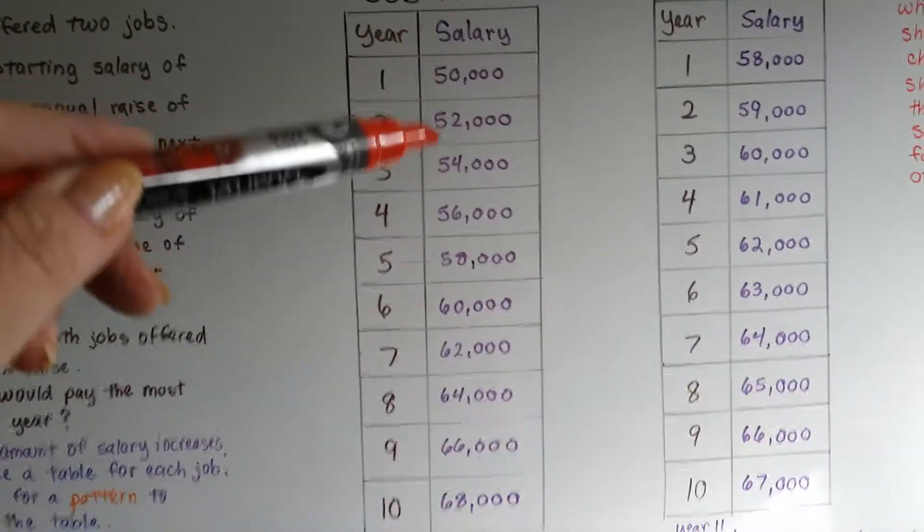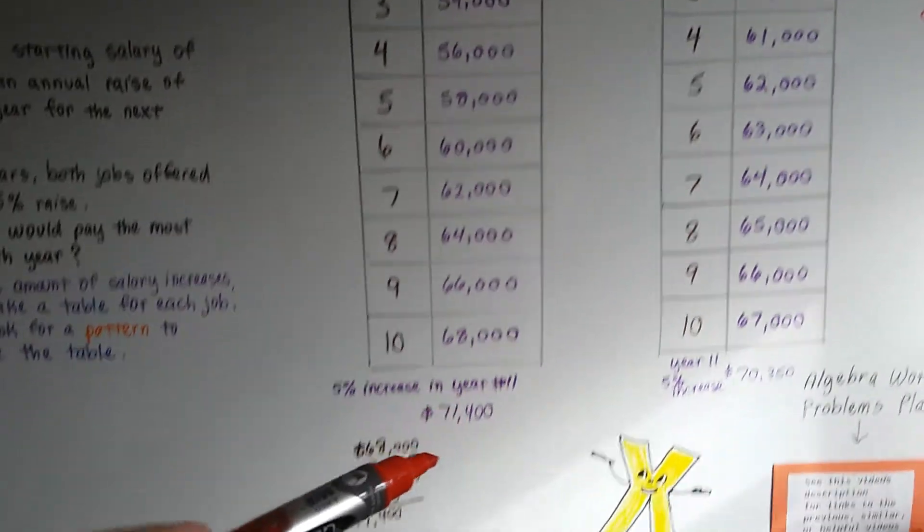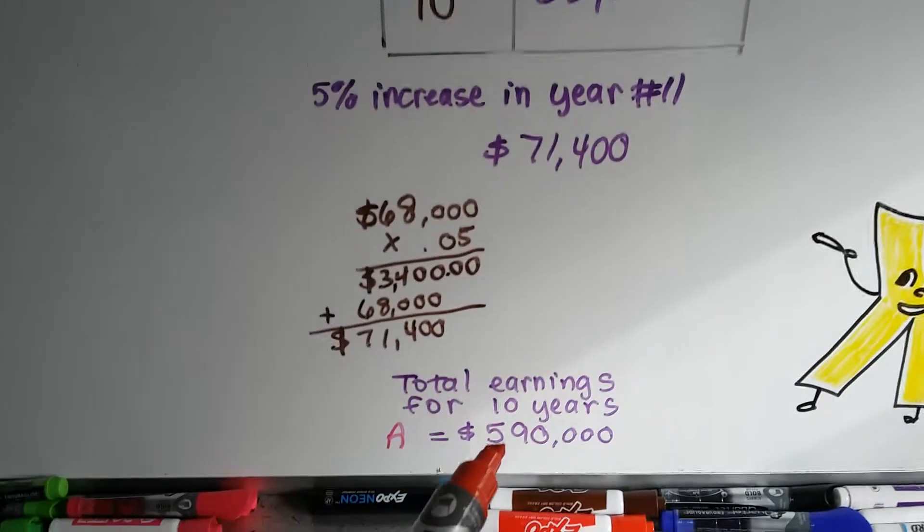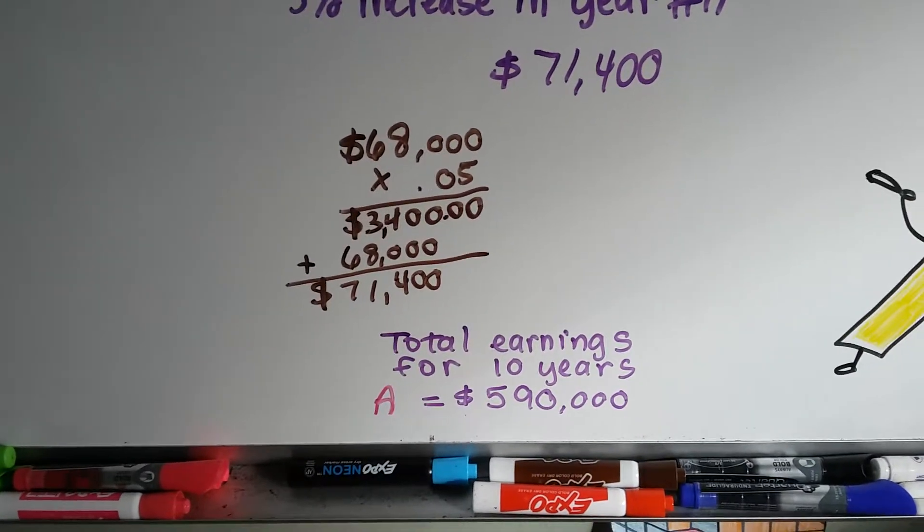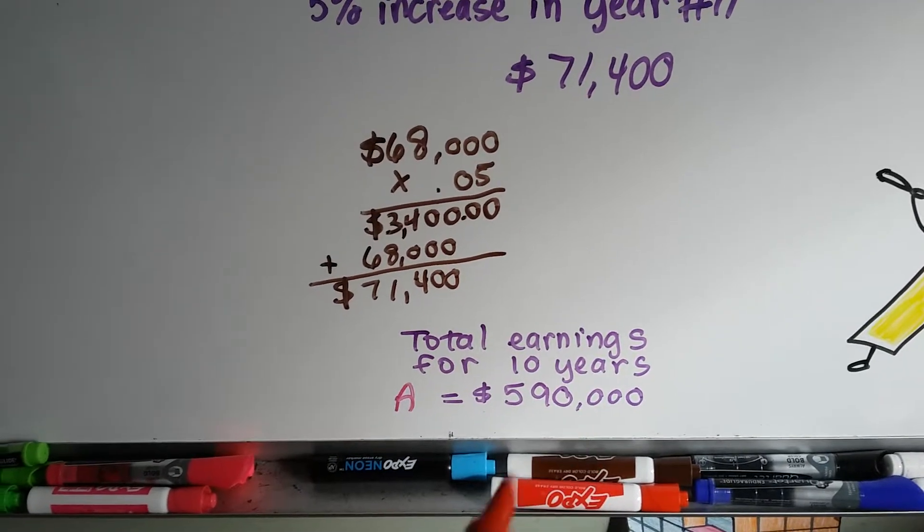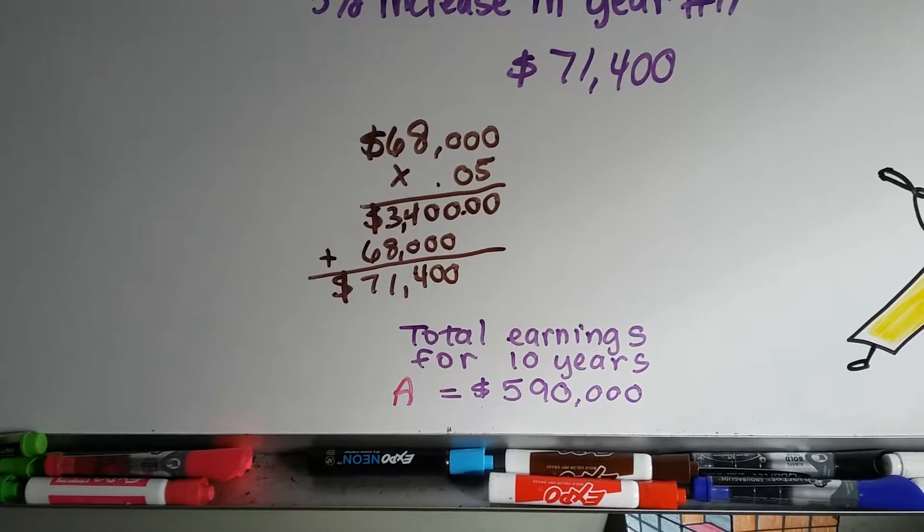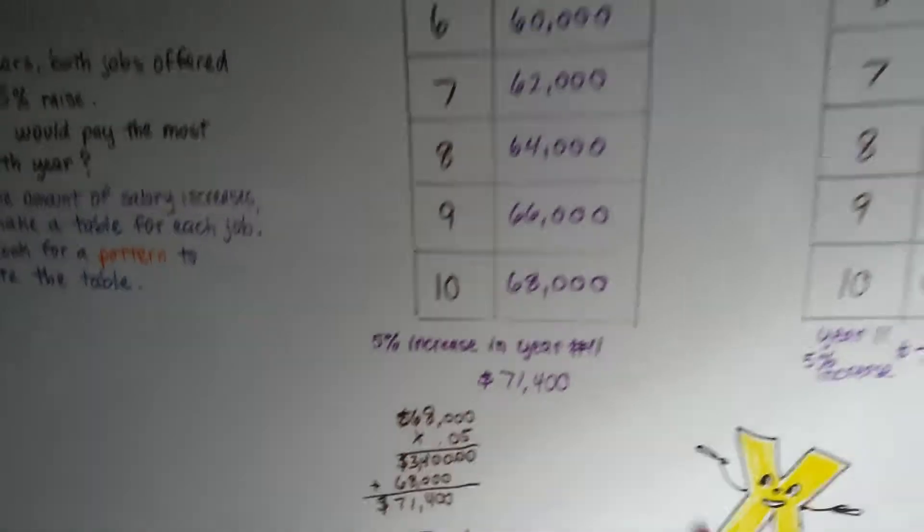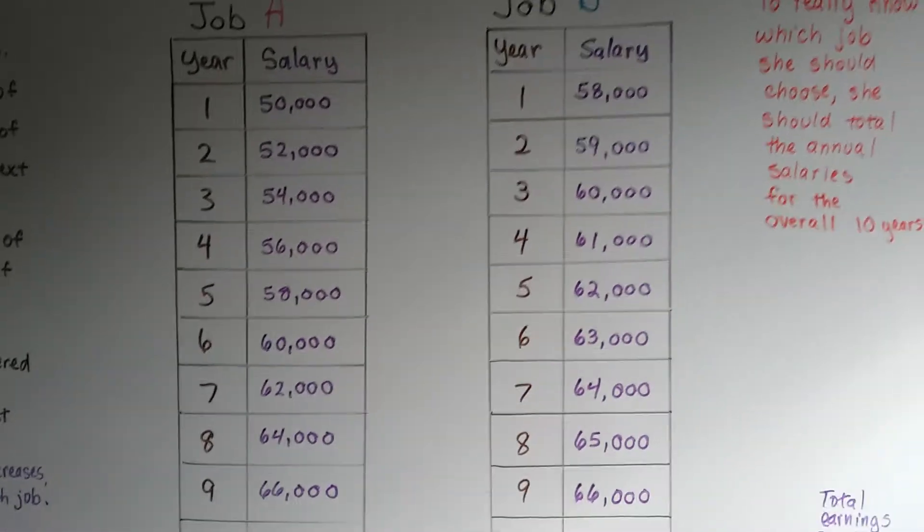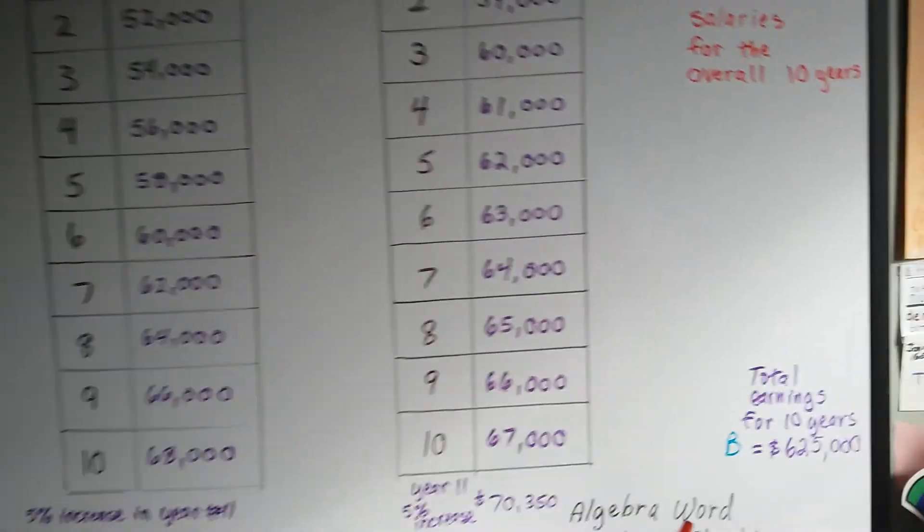When we totaled up all these numbers here, I got a total of a 10-year earning of $590,000 from job A. But when I totaled up all the salaries from job B for the 10 years, I got a total of $625,000 for working 10 years.